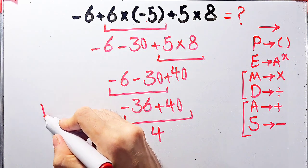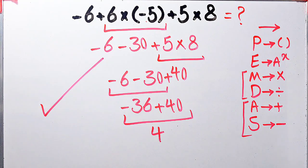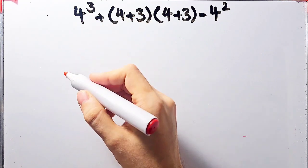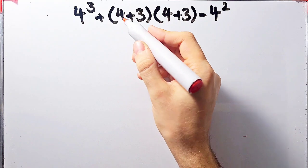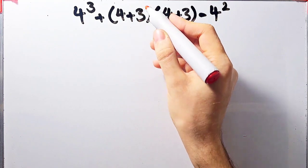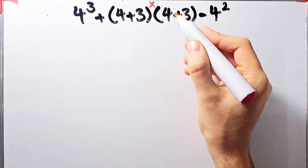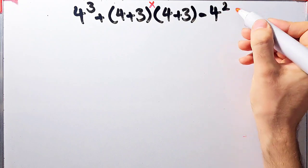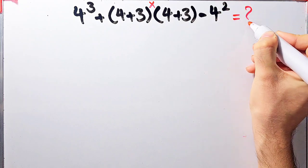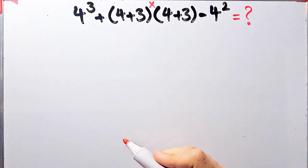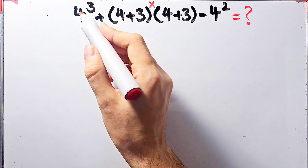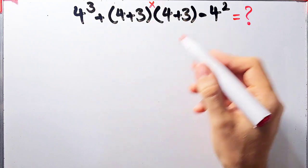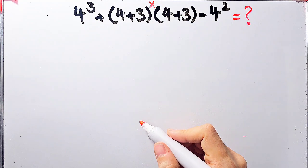Let's solve another question about the PEMDAS rule. We have 4 to the power of 3, plus open parenthesis 4 plus 3 close parenthesis, then times open parenthesis 4 plus 3 close parenthesis, minus 4 to the power of 2. In this question we have exponent, addition, parentheses, multiplication, and subtraction.